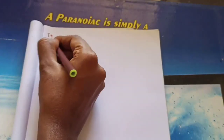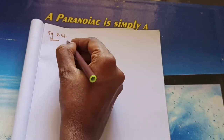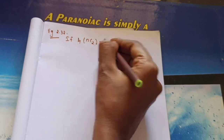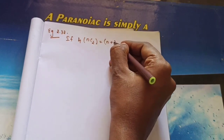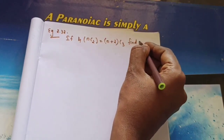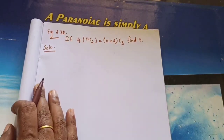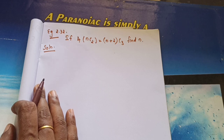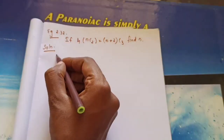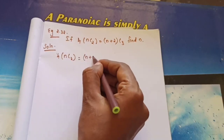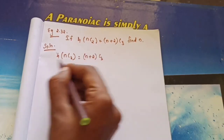Next question: Example 2.32. If 4 × nC2 = (n+2)C3, find n. We write nC2 as n(n−1) divided by 2×1, and (n+2)C3 as (n+2)(n+1)(n) divided by 3×2×1. So 4 × n(n−1)/2 = (n+2)(n+1)(n)/6.